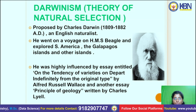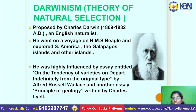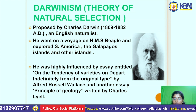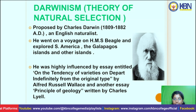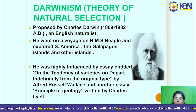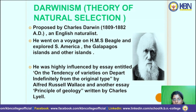Darwin proposed the Theory of Natural Selection. Charles Darwin lived from 1809 to 1882 and was an English naturalist. He went on a voyage on HMS Beagle and explored South America, the Galapagos Islands, and other islands. He was highly influenced by the essay 'On the Tendency of Varieties to Depart Indefinitely from the Original Type' by Alfred Russel Wallace.